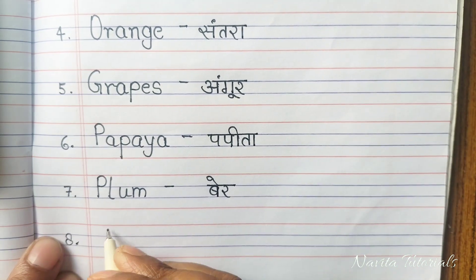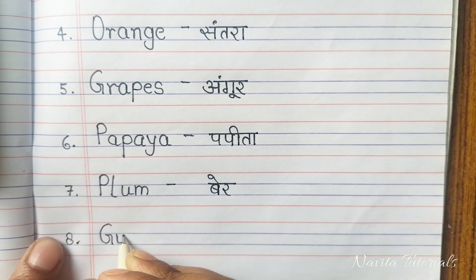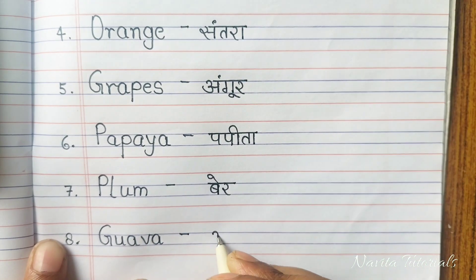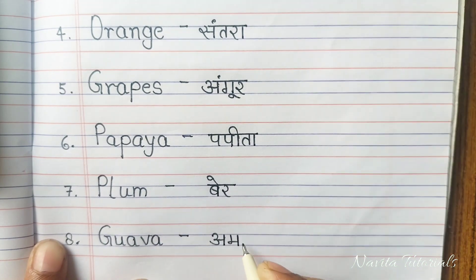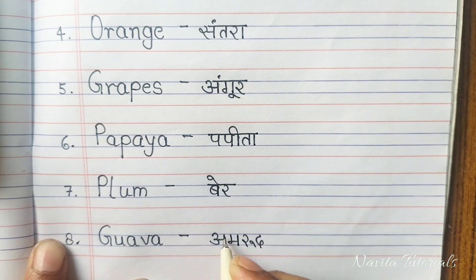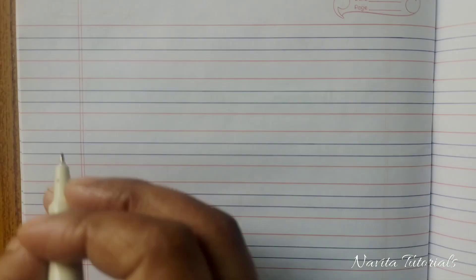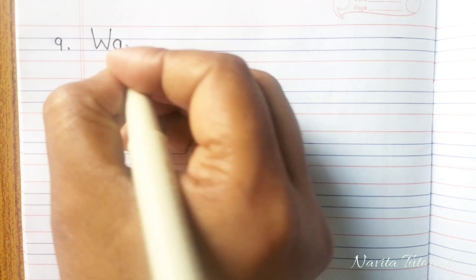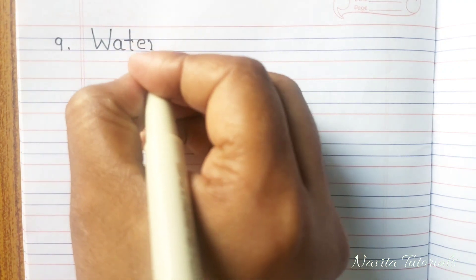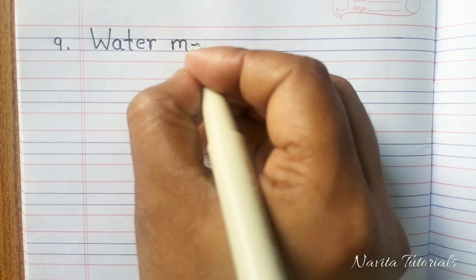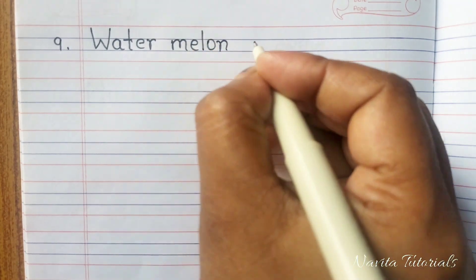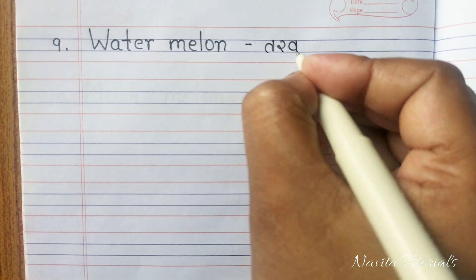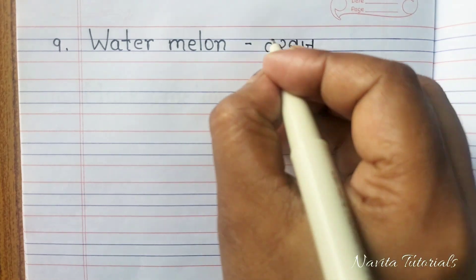Eighth: G-U-A-V-A, Guava. Guava means Amrood. Ninth: W-A-T-E-R-M-E-L-O-N, Watermelon. Watermelon means Tarbuj.